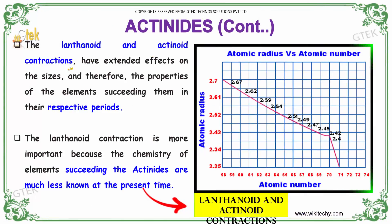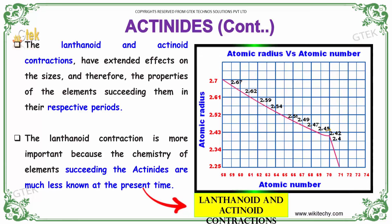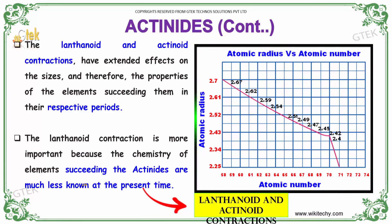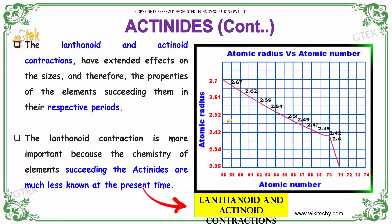The lanthanide and actinide contractions have extended effects on the sizes and therefore the properties of the elements succeeding them in their respective periods. The lanthanide contraction is more important because the chemistry of elements succeeding the actinides is much less known at the present time. Reducing radii based on atomic number is called lanthanide and actinide contraction.